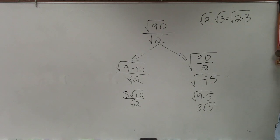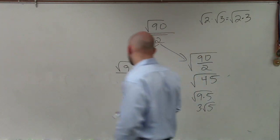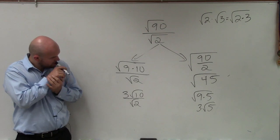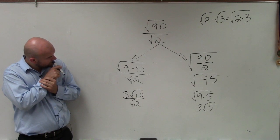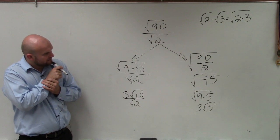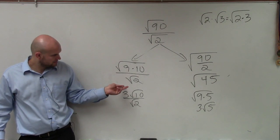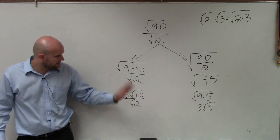No. No. Yes. 9 times 10, 3. Did I do something wrong? No. What did I mess up? 90 divided by 2 is 45. 90 divided by 2 is 45. No. Oh, yeah. OK. All right. Thank you.